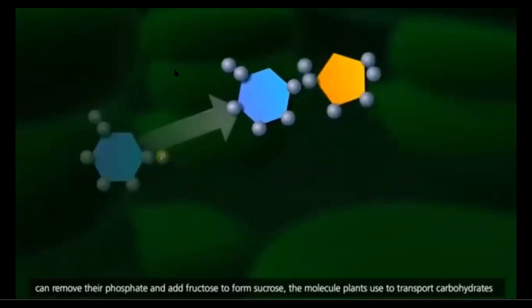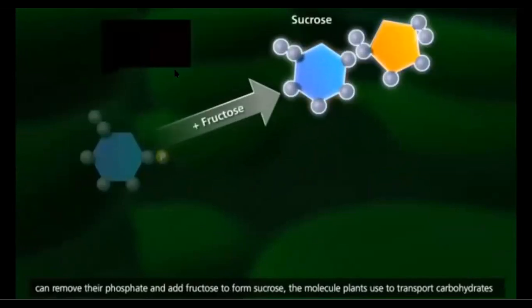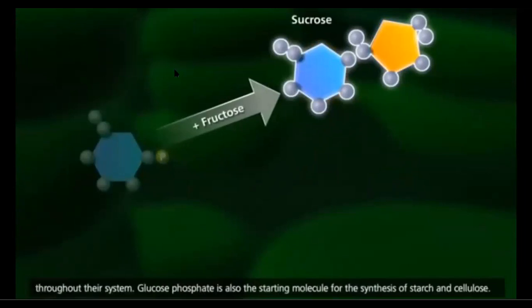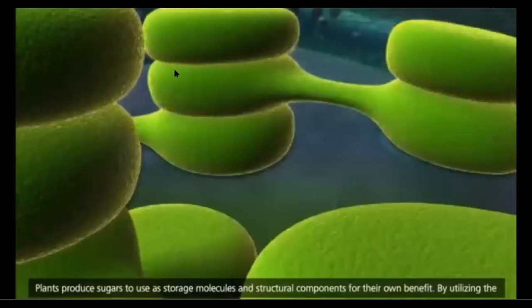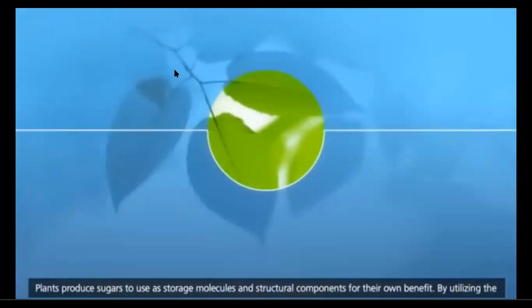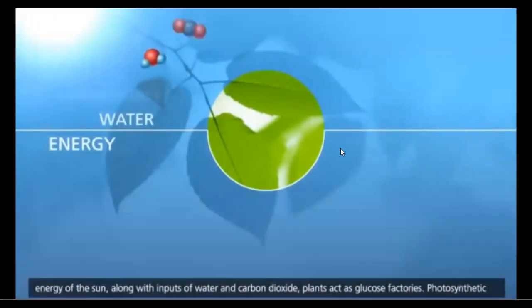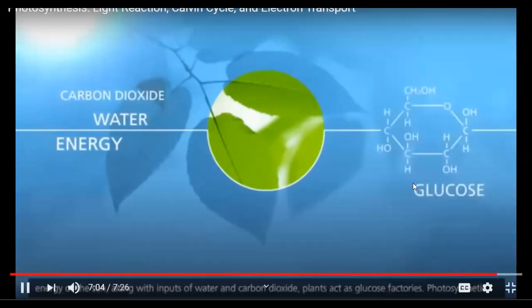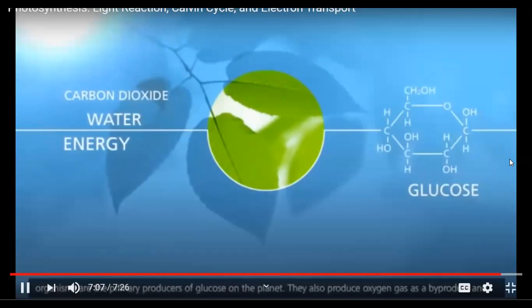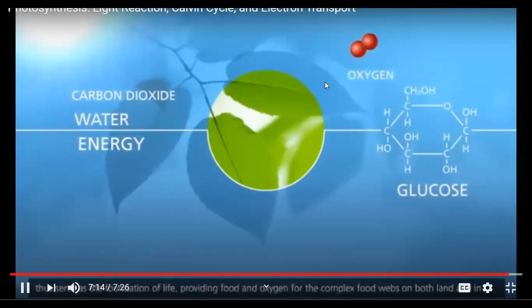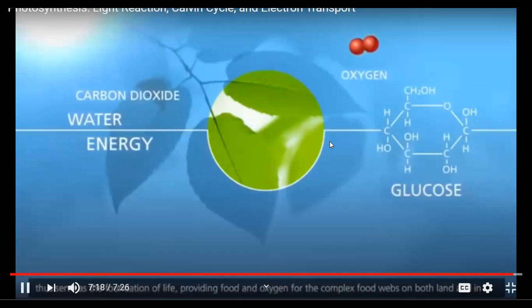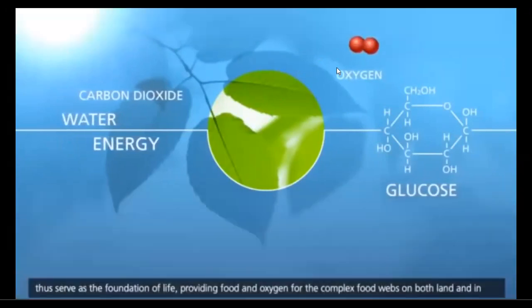These molecules can remove their phosphate and add fructose to form sucrose — the molecule plants use to transport carbohydrates throughout their system. Glucose phosphate is also the starting molecule for the synthesis of starch and cellulose. Plants produce sugars to use as storage molecules and structural components. By utilizing the energy of the sun, along with inputs of water and carbon dioxide, plants act as glucose factories and are the primary producers of glucose on the planet, providing food and oxygen for complex food webs on land and in the oceans.